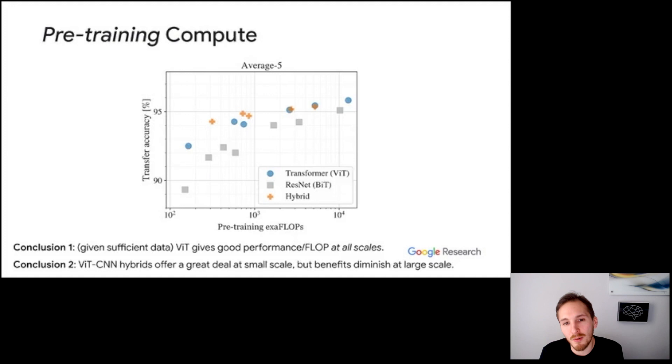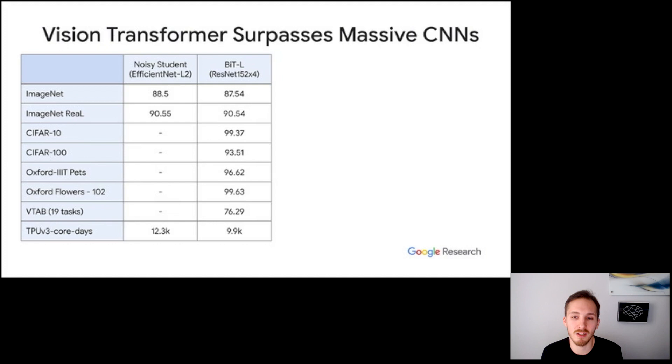This next plot is about the pre-training compute. The y-axis is still transfer accuracy, although in this case averaged over five datasets. And the x-axis is the computational cost of pre-training in exaflops. We compare models of three different types: ResNets, vision transformers, and hybrids between ResNets and transformers. There are two main observations to be made here. First, transformers outperform ResNets across the board, achieving the same transfer accuracy with two to four times less compute. Second, hybrids have an advantage over transformers for smaller models on the left-hand side, but this advantage vanishes for larger models on the right. This means at scale, the general transformer architecture is sufficient to get great results.